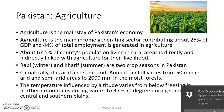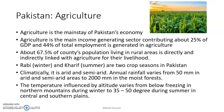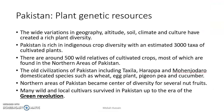Pakistan is located between the center of the tropical and temperate zones. As a result, temperatures range from below freezing in the northern mountains in winter to 35 to 50 degrees centigrade in the southern plains. This variation is why Pakistan is rich in genetic diversity, with many crop varieties and animal species.